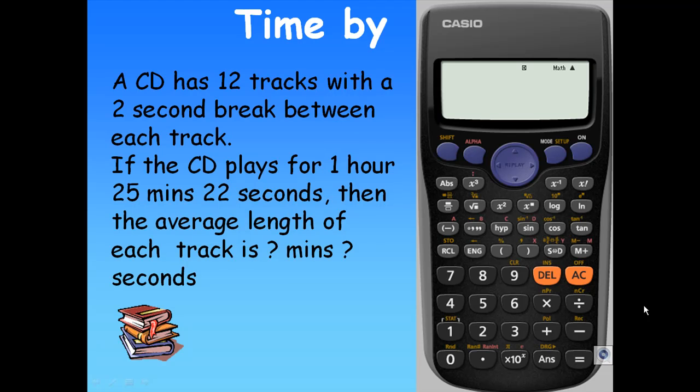Notice that because there are 12 tracks, there will be 11 breaks in between. So the total number of breaks is 11 times 2, which equals 22 seconds for the break. Let me illustrate this calculation by using my calculator.